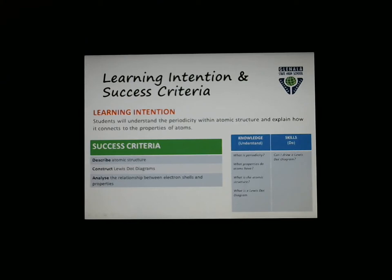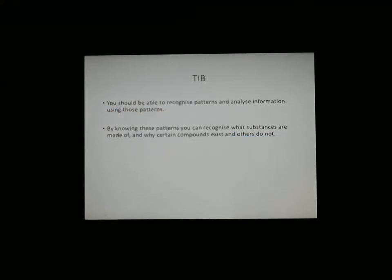So why are we doing this? If you can recognize patterns and analyze information using those patterns, that's the core of science. Science is about patterns, recognizing those patterns and then explaining what those patterns mean. And then sometimes down the track, if you go further with chemistry, you can recognize what certain substances are made of just by looking at the patterns in the name. Or you can think about why some things exist and others don't exist.